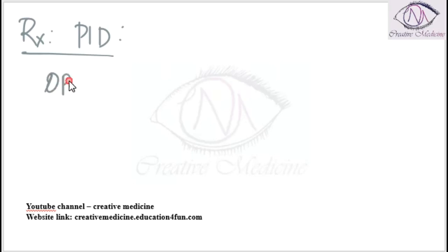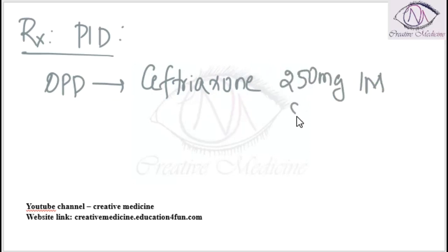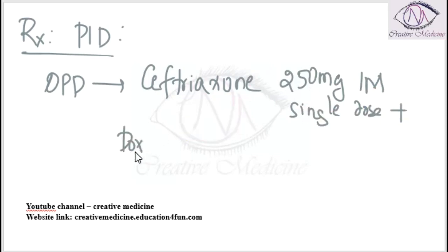For pelvic inflammatory disease, oral or outpatient department (OPD) management — the first regimen: we can give ceftriaxone 250 mg intramuscularly as a single dose, with doxycycline 100 mg twice a day for 14 days, and metronidazole 500 mg twice a day for 14 days.